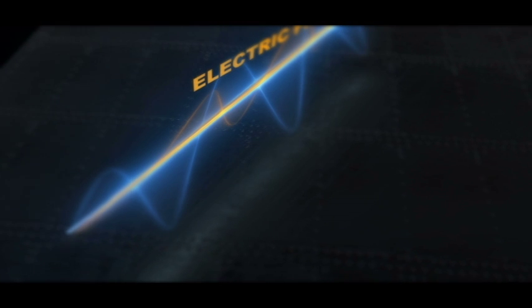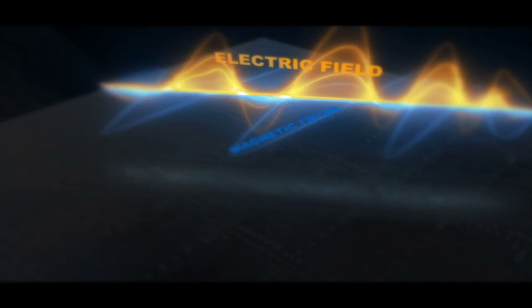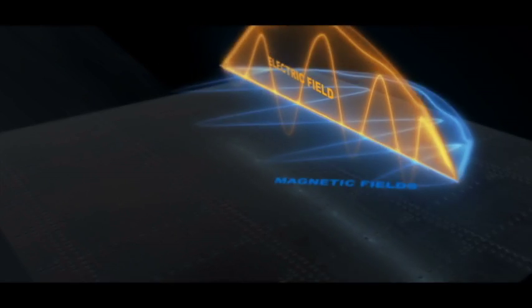When current passes through a wire, it creates electric fields and magnetic fields. These fields are perpendicular to each other.